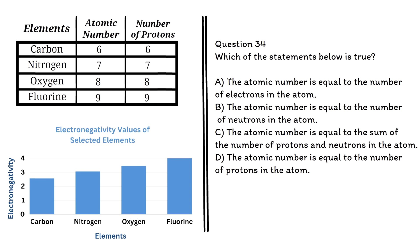a. The atomic number is equal to the number of electrons in the atom. b. The atomic number is equal to the number of neutrons in the atom. c. The atomic number is equal to the sum of the number of protons and neutrons in the atom. d. The atomic number is equal to the number of protons in the atom.